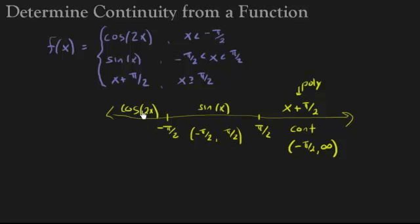And finally, cosine of 2x is continuous on its domain, and its domain is from negative infinity—again, I'm getting them from up here—negative infinity to negative π/2. So these are all places where we're continuous right here.